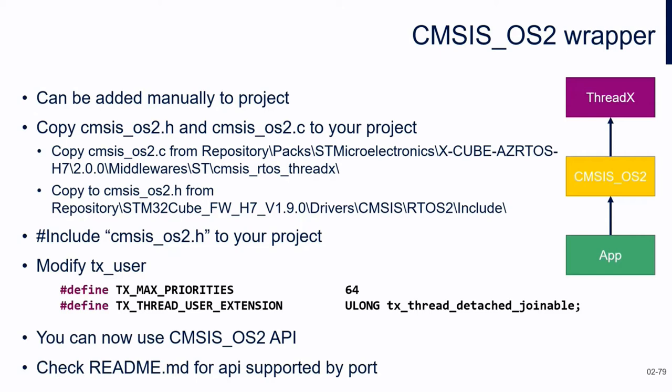In practice, with CMSIS-OS v2, a middleware can work independently from the OS. CMSIS-OS gives the chance to call the API of the OS, which will then be translated into the operative system you wish to use — it can be ThreadX or RTOS, FreeRTOS as an example.